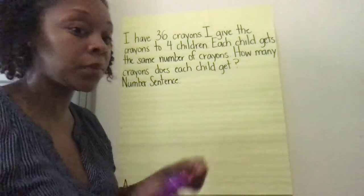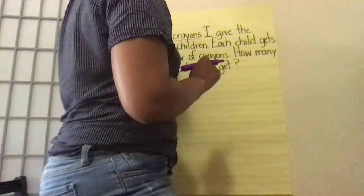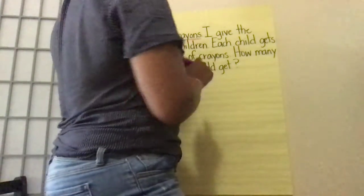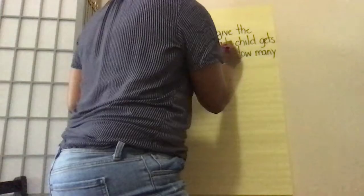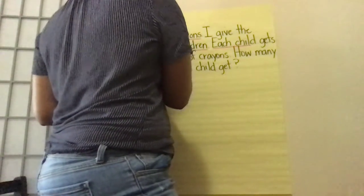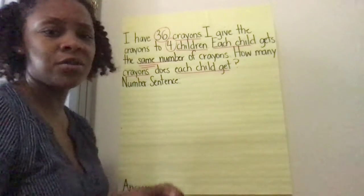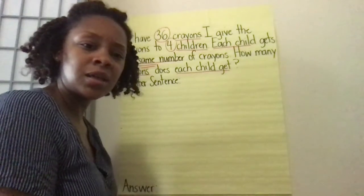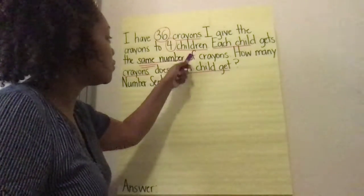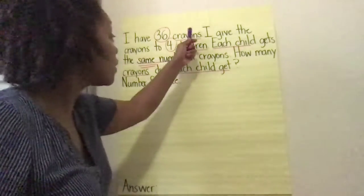Remember, a group holds something. I have 36 crayons — is that my group? I give the crayons to four children. Each child gets the same number of crayons. How many crayons does each child get? Are the crayons holding anything? Four children — are the children holding anything? Yes. So the children are our groups because they're holding the crayons.